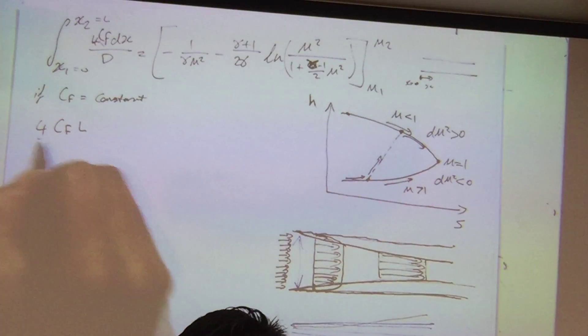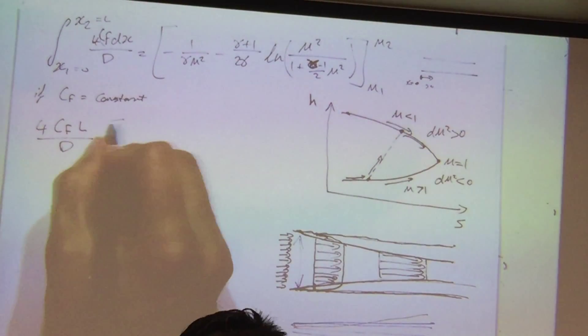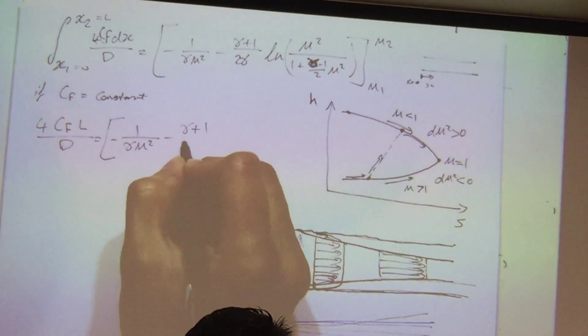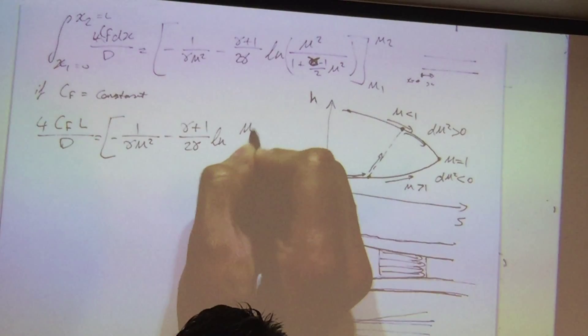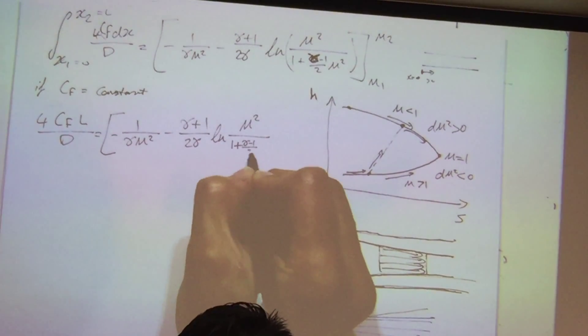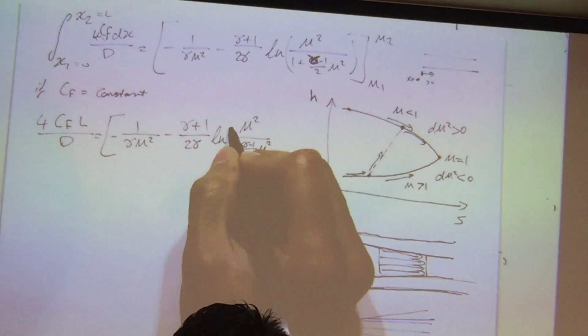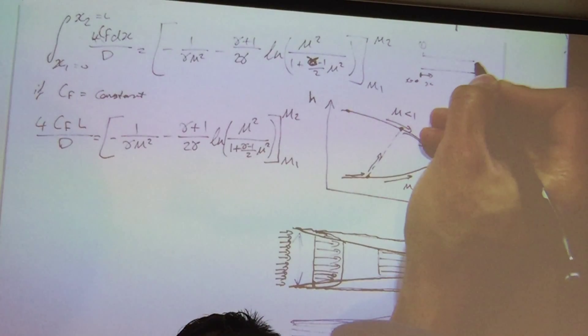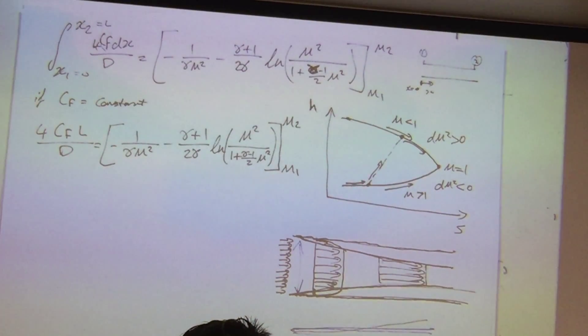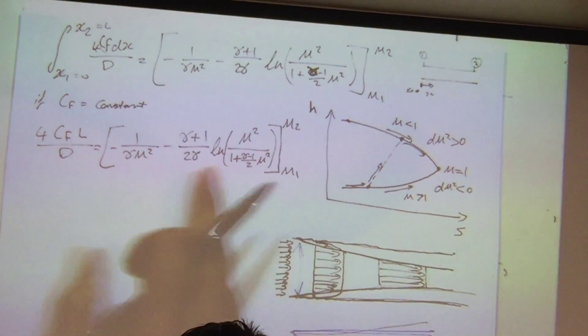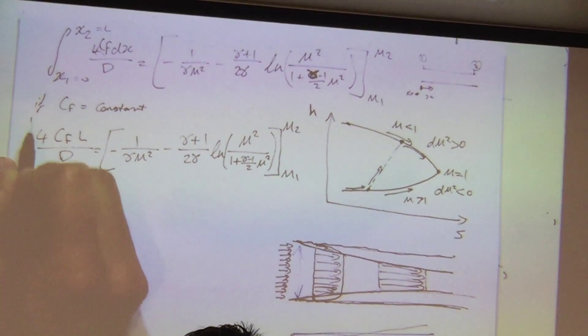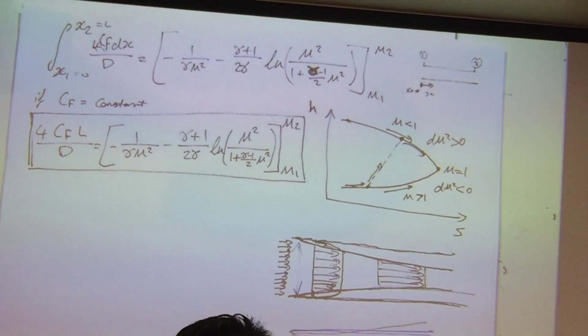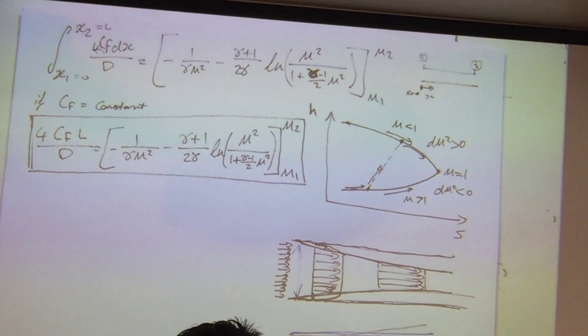So if I put my integration, what I get is 4 CFL divided by d is equal to this whole information right here, which is 1 over gamma M squared minus gamma plus 1 over 2 gamma, natural log of M squared over 1 plus gamma minus 1 over 2, M squared. The whole thing, obviously we need to go to the bounds of M2 versus M1, so if this is station 1 and this is station 2, it's integration from Mach 2 to Mach 1, so all you need to do is substitute this equation and we'll go to an example on it. This is the critical equation that we need to use for Fanno flow. And generally, we'll just go into the table, you can use the friction tables and whatnot, and you actually get the Mach numbers, but here we're gonna use the equation.